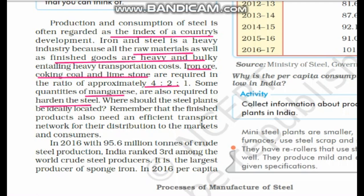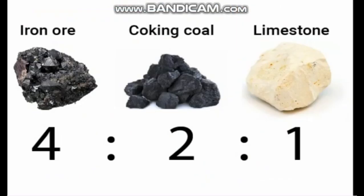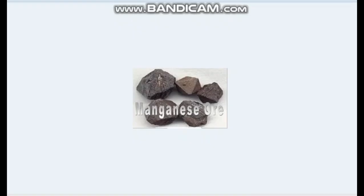Let us look at the process and the percentages. Iron ore is used at four parts, coking coal at two parts, and limestone at one part — the 4:2:1 ratio used for making steel. This picture shows how manganese ore looks; it is added to strengthen and harden the steel.